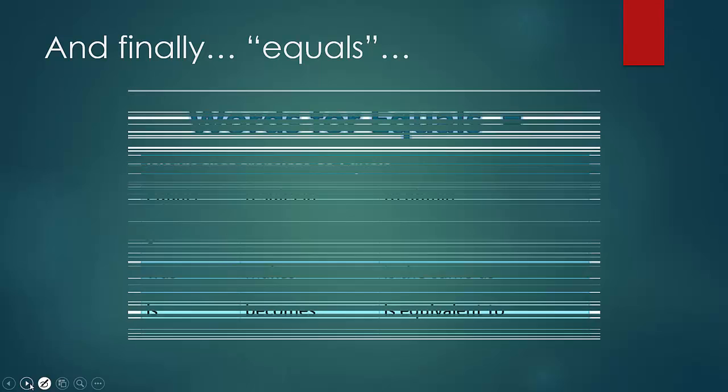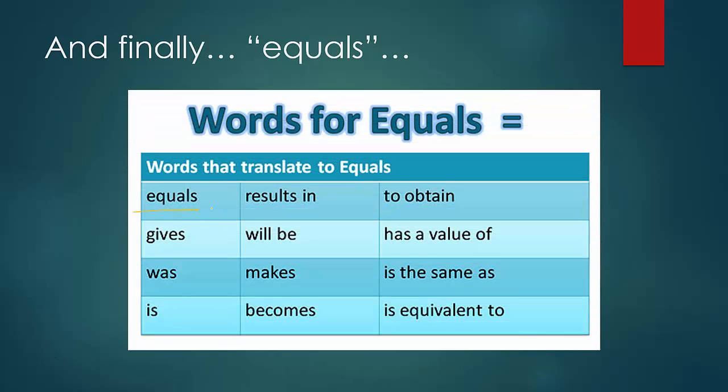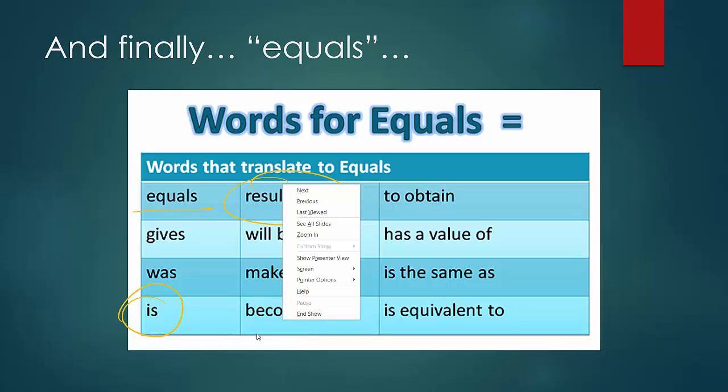And then, finally, we have equals. So, words for equals. Obviously, equals. Is, is a big one. Results in. Becomes. Nah, not so much. We're going to erase that one, actually. Is equivalent to. That's a big one. Has a, is the same as, maybe. But, mainly, equals, is, results in, is equivalent to. When you have word sentences with equal signs, that's what you're going to be looking for.